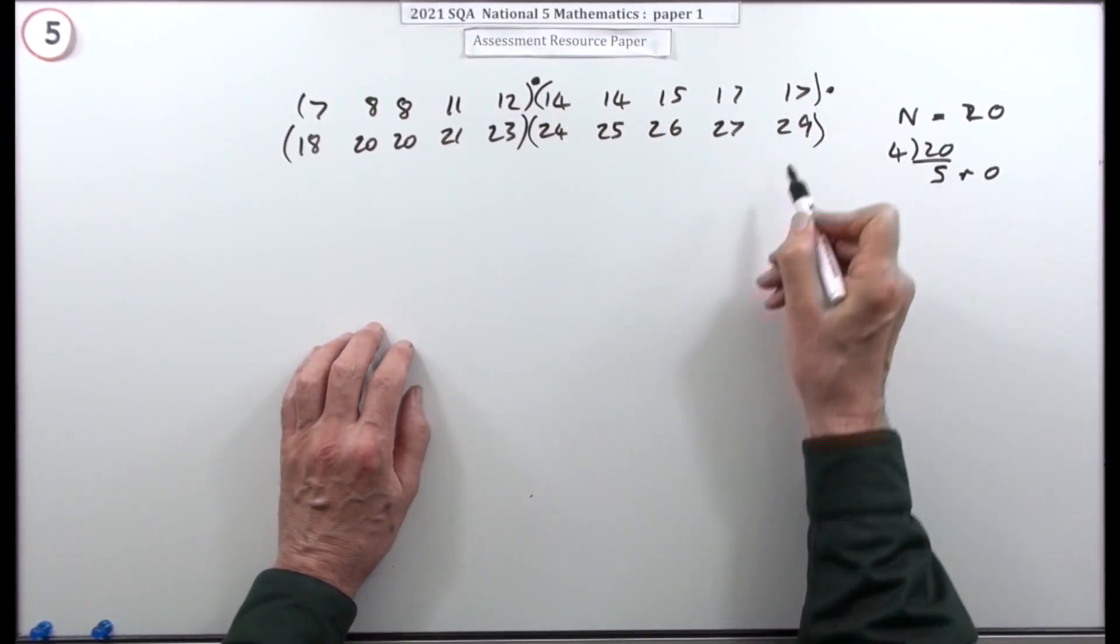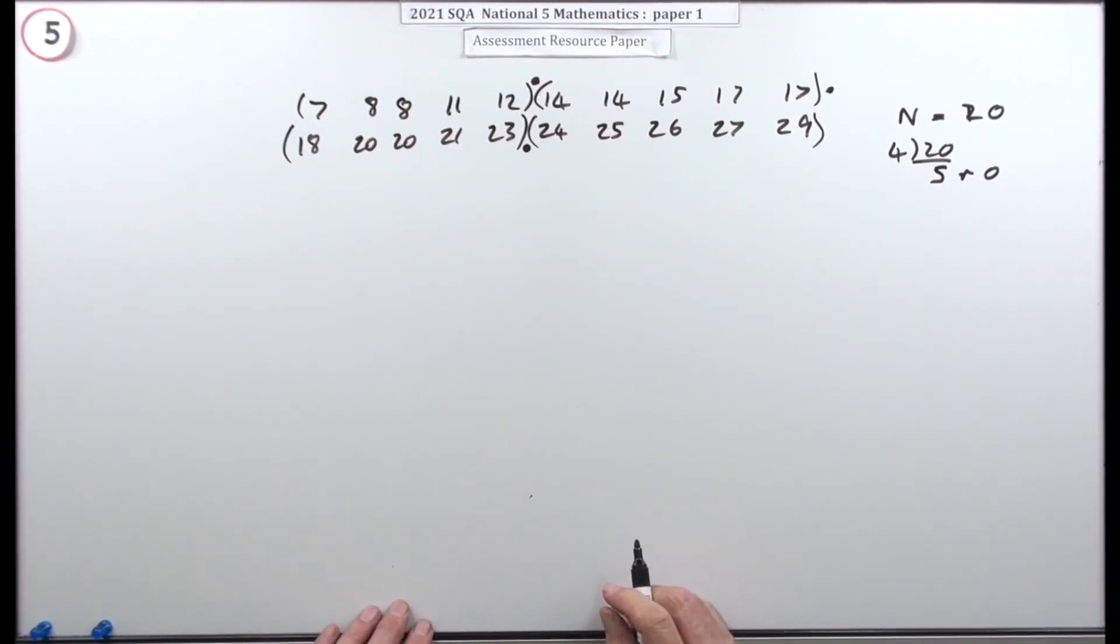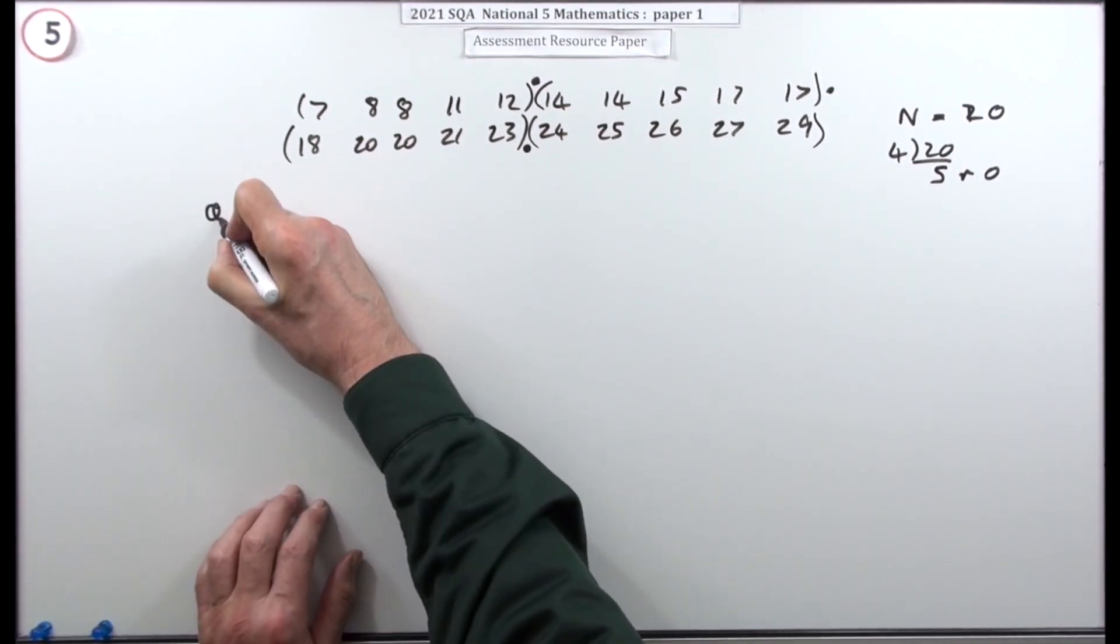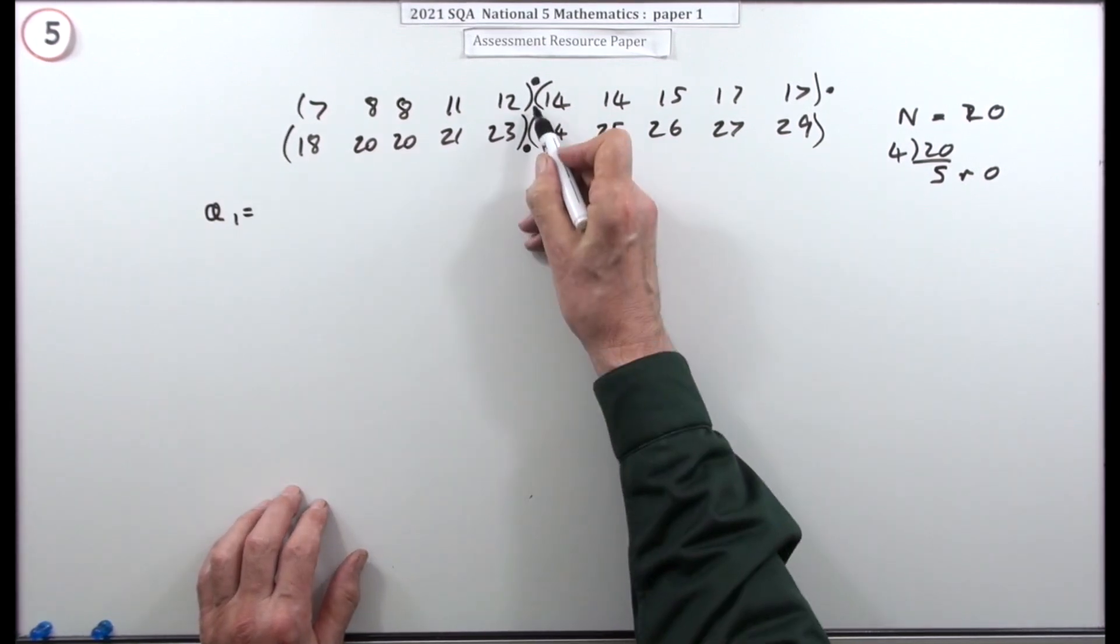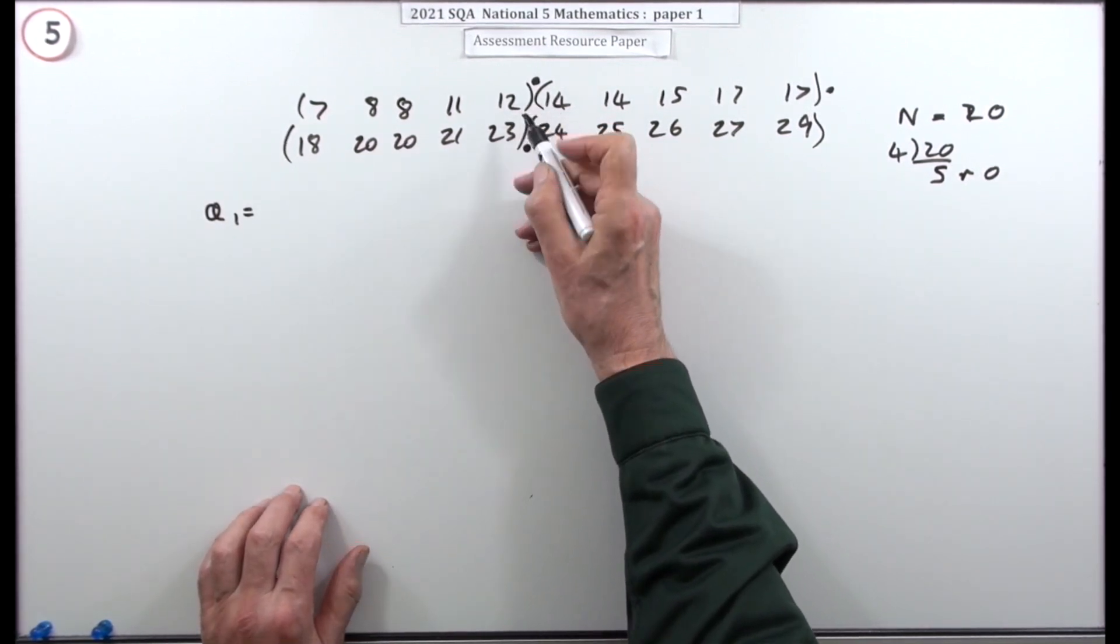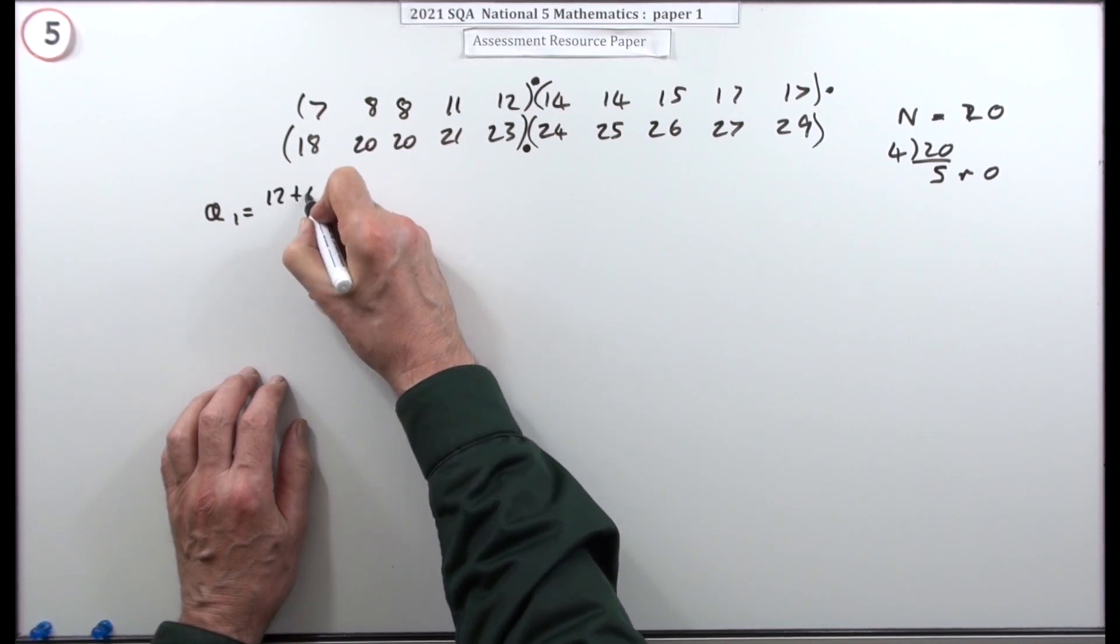There's the median, the second quartile, and then there's the upper quartile. The lower quartile must be between the 12 and the 14 because I've got nothing there, so what would fit between 12 and 14? Take the average: 13.